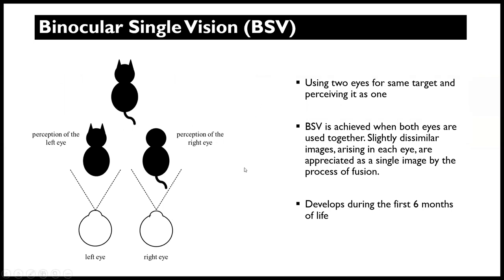Finally, we have the concept of binocular single vision, which is very important. The fact that you use two eyes to perceive one image is a significant thing. Binocular single vision is achieved when both eyes are used together — even though each eye sees a slightly different image, the brain processes a single image through a process of fusion. For example, the right eye may see the tail of an image while the left eye sees the ears, and ultimately they fuse into one full image. This normally develops during the first six months of life.